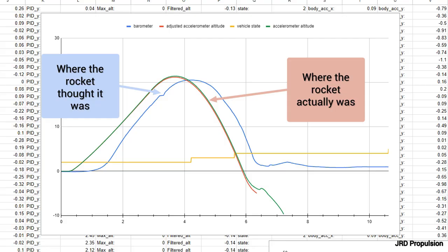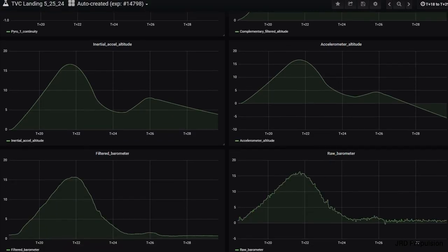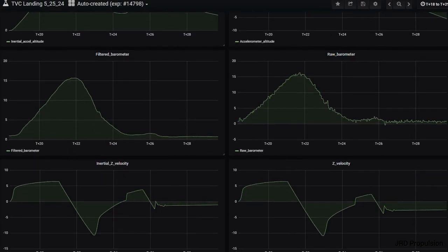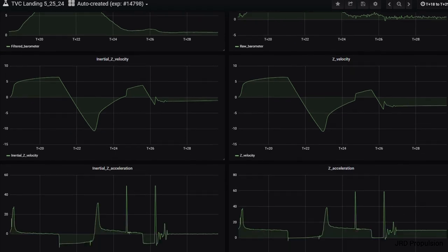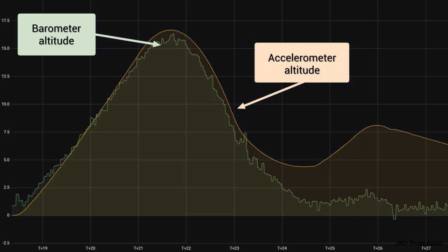As a result, the rocket ignited the motor much too late and it crashed into the ground. To fix this, I began to investigate the flight data. Since the rocket only had a single means of detecting altitude using the barometer, it was really difficult to tell exactly how accurate the calculations really were. By doing extensive ground testing, I figured out that I could achieve a much higher accuracy altitude measurement by using the onboard accelerometers and integrating them twice to get position.